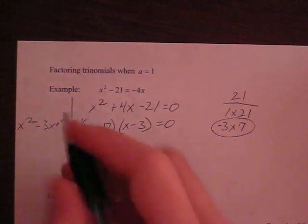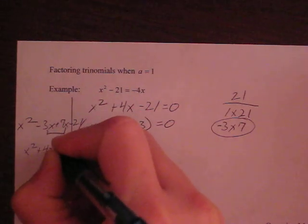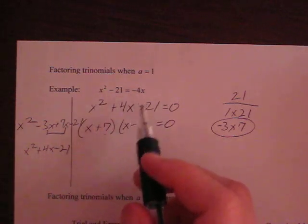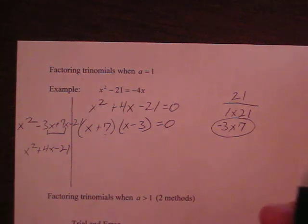And if you combine these two middle terms together, you get x squared plus 4x minus 21. So since I've checked it and I ended up with what I started with, I know for 100% sure that this is my correct factor pair.